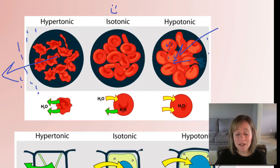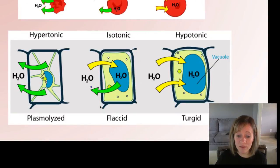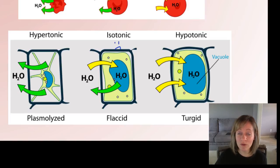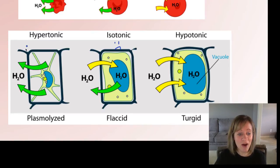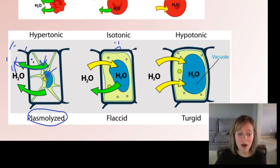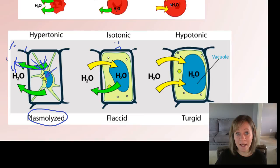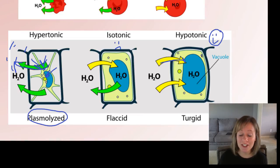Now look at the plant cell. In an isotonic environment, there's no net water movement — this is actually not good for a plant cell. This is when it becomes flaccid or limp, like if you left celery out on the counter overnight. In a hypertonic environment, lots of solute outside means water leaves and the plant cell becomes plasmolyzed — the plasma membrane shrinks away from the cell wall. Not good. In a hypotonic environment, just like in the animal cell, water enters — and the plant cell actually likes this. It likes to be turgid, plump and full of water with its central vacuole full.